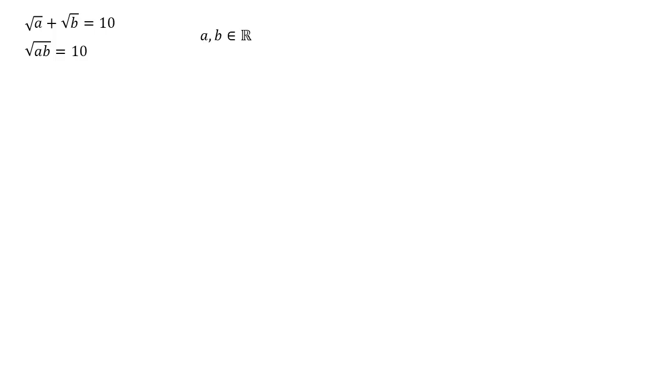We've got a lot of square roots here, so one thing that is often a good thing to start with to try and get rid of those square roots is to do some squaring. So we're going to take the first equation, root a plus root b equals 10, and we're going to square both sides.